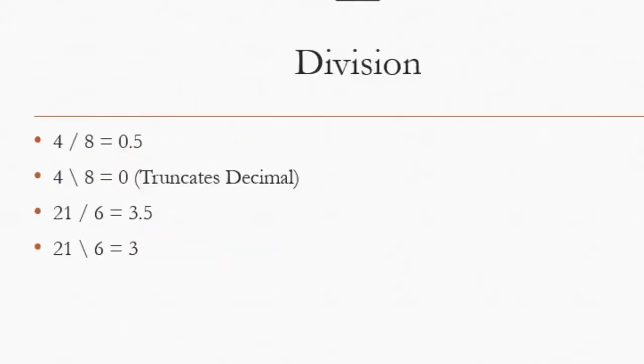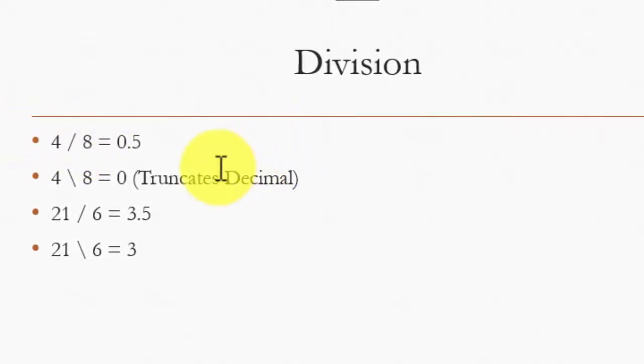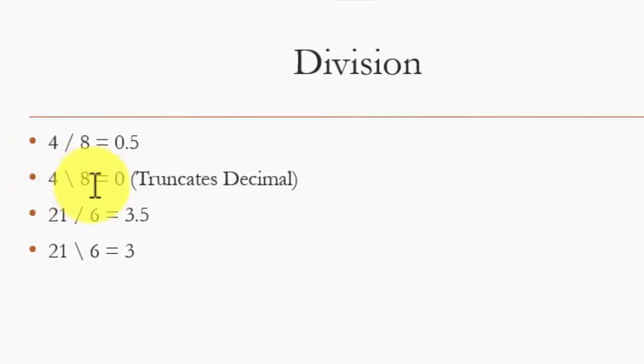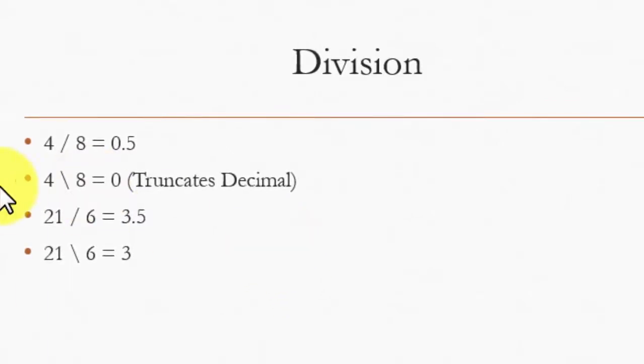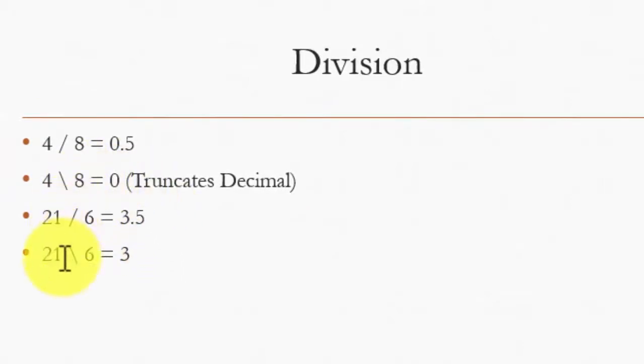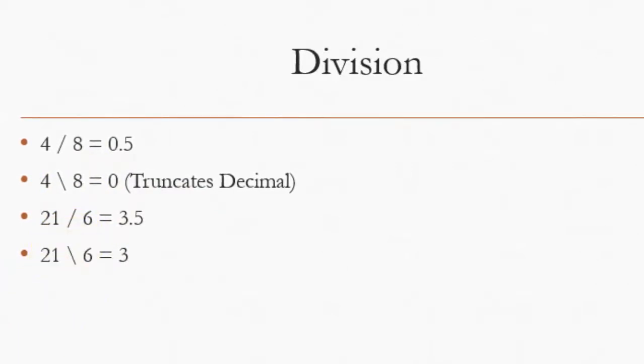Now about division. If we use the forward slash, that means the slash leaning forward, 4 / 8 will give you 0.5. But if we do the backward leaning slash, which is 4 \ 8, the answer behind the scene will be computed as 0.5, but it will truncate the decimal. So the answer you're going to be getting will be just 0. In the third example, we have 21 ÷ 6. The answer is 3.5. But if we use this division symbol, it will truncate the 0.5 and just give you back the number 3.